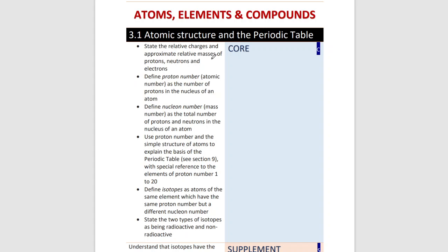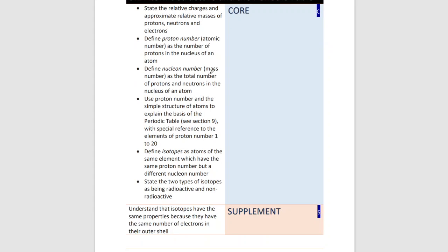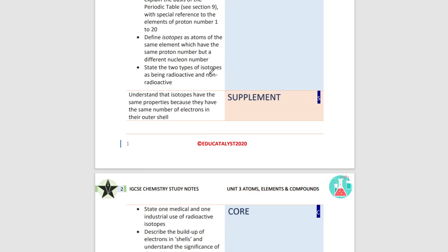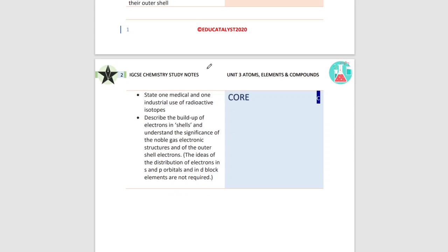We're going to start by having a look at protons, neutrons and electrons. We also need to define what a proton number is, what a nuclear number is, and how we can form these. We'll have a look at the nucleus, isotopes, and the two types of isotopes. After that, we'll have a look at the uses of an isotope, specifically the use of a radioactive isotope. Finally, we'll look at electrons in the shell and how we can distinguish between each of the different electrons in different elements.